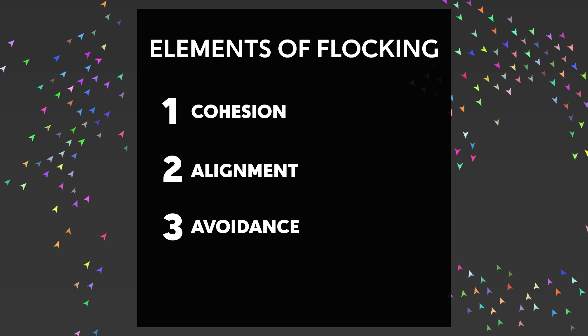In a basic flocking implementation, this emergent coordination is the result of three behaviors: cohesion, alignment, and avoidance. These can be implemented in a number of ways, but first let's dive into what these terms mean.